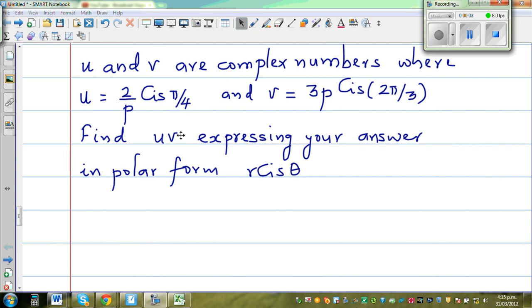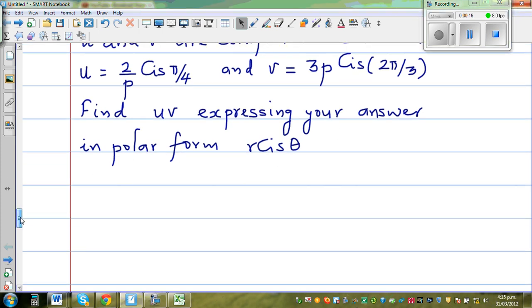u and v are complex numbers where u is 2 over p cis π/4 and v is 3p cis 2π/3. Find u times v expressing your answer in polar form r cis θ.